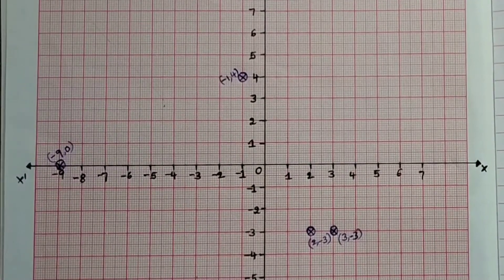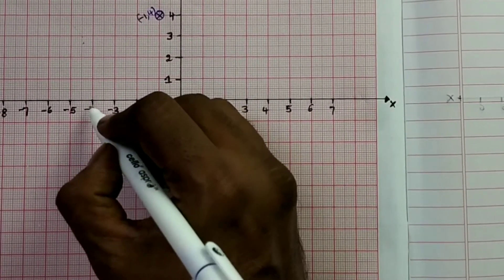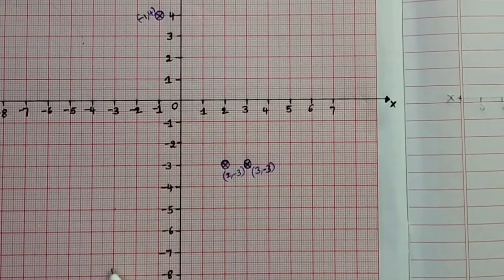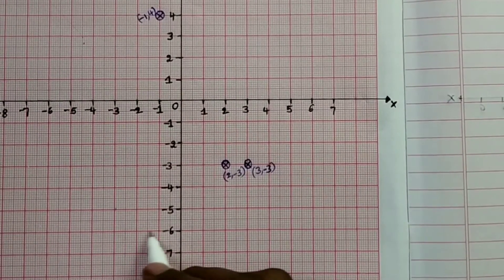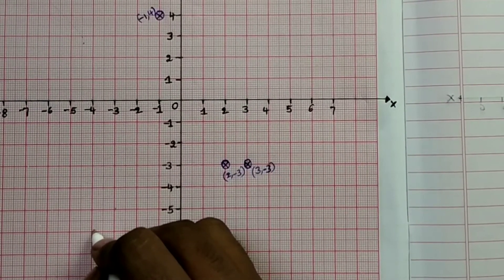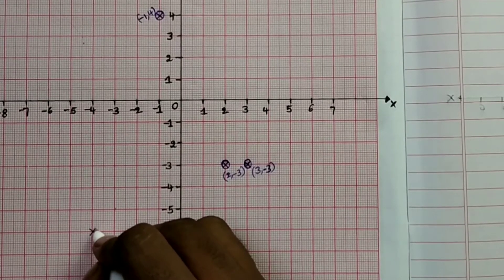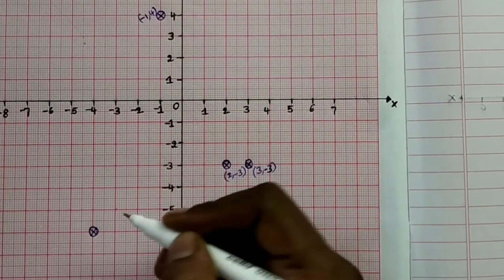The next point is (-4, -6). X-axis is minus 4 and y-axis is minus 6. This is the required point (-4, -6).